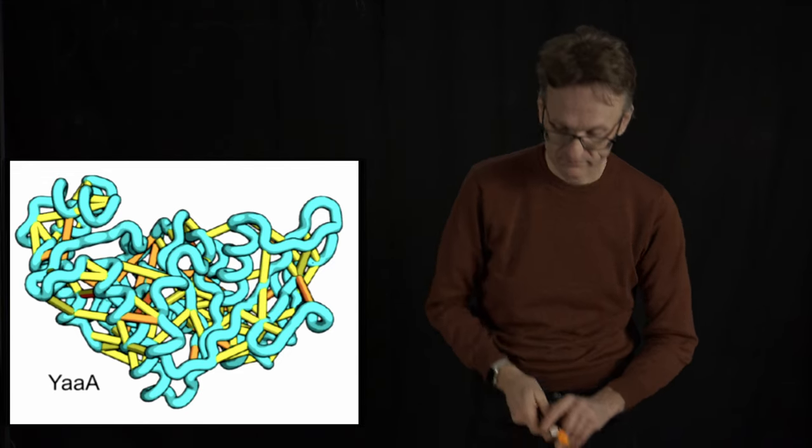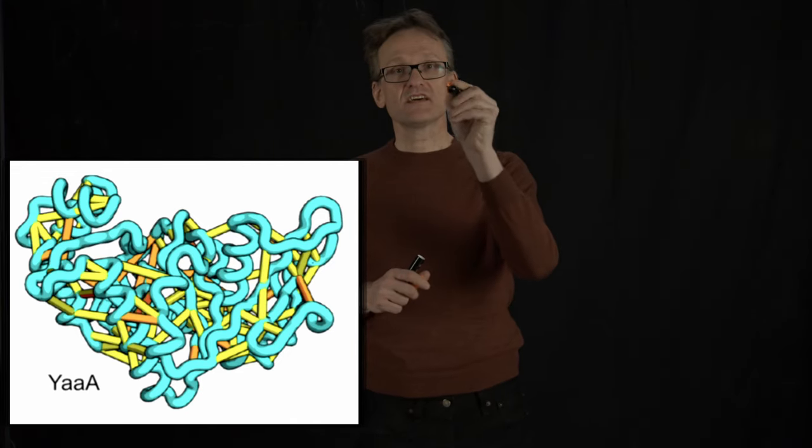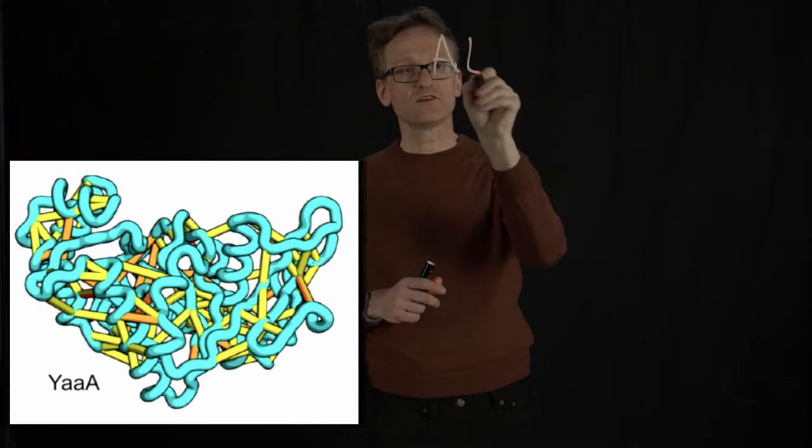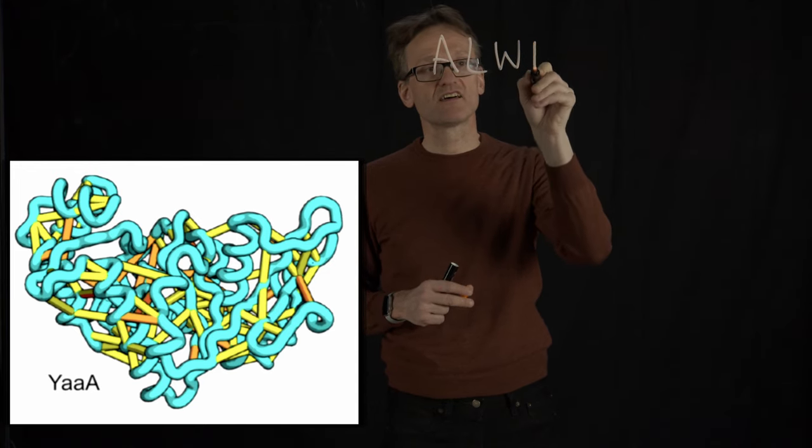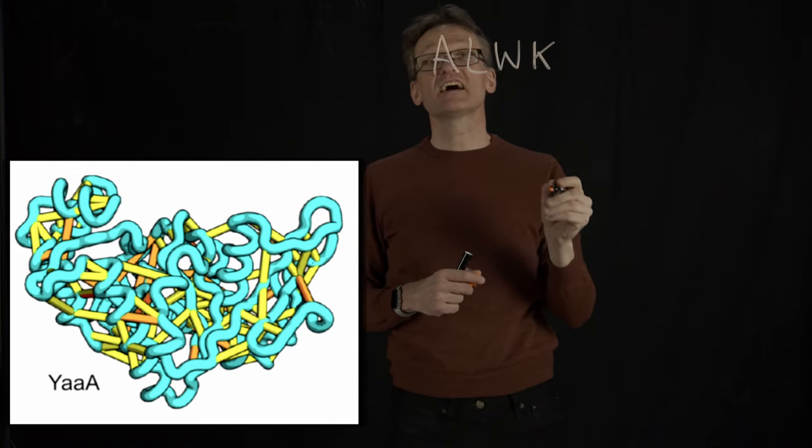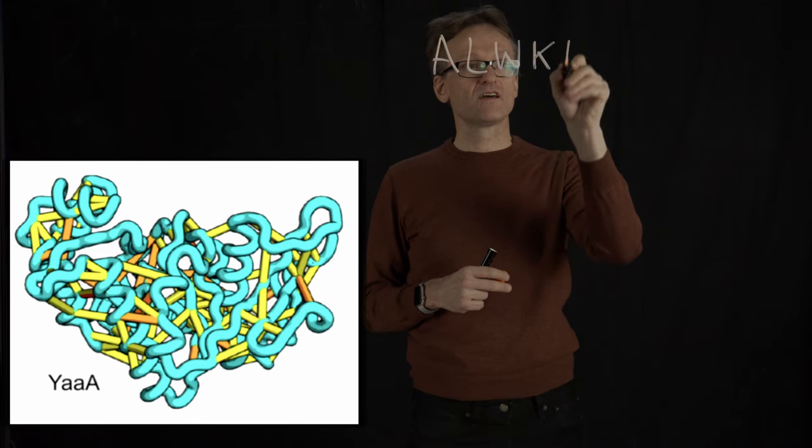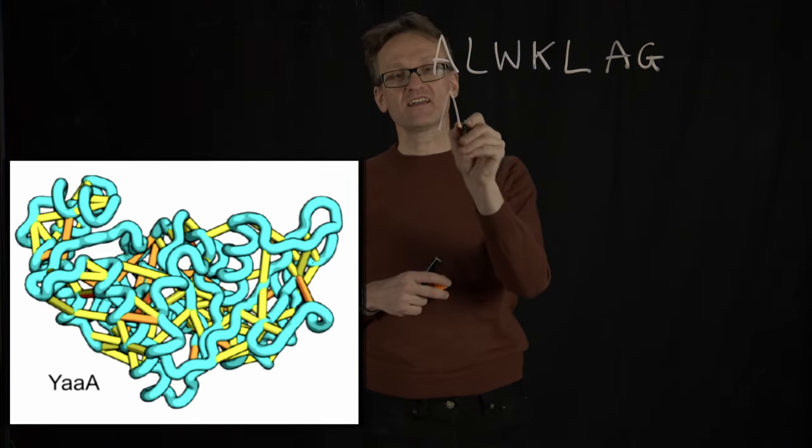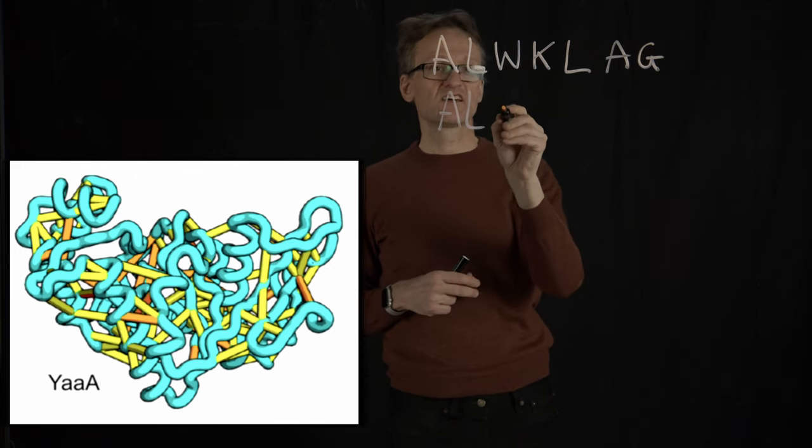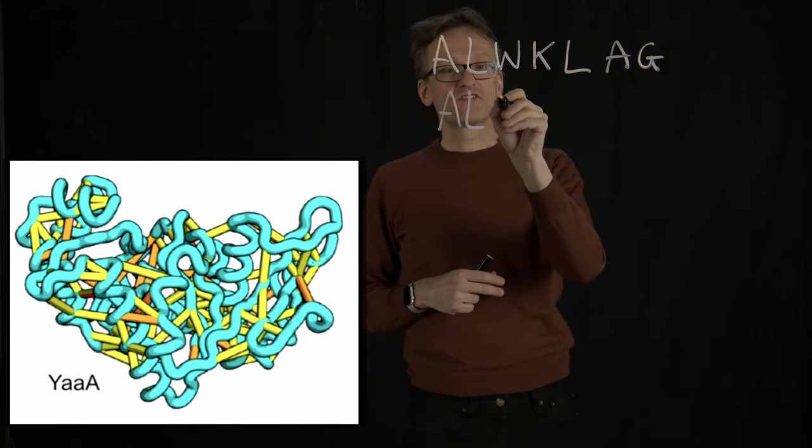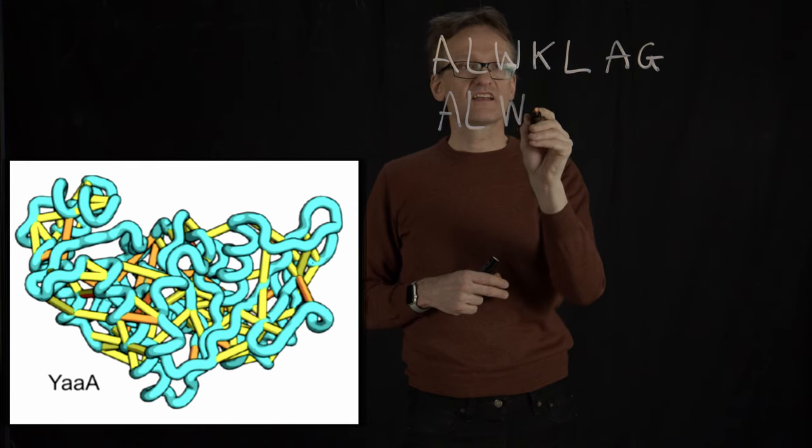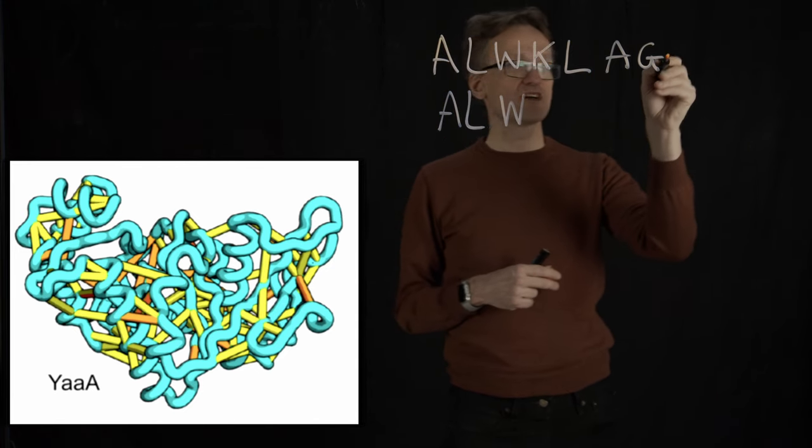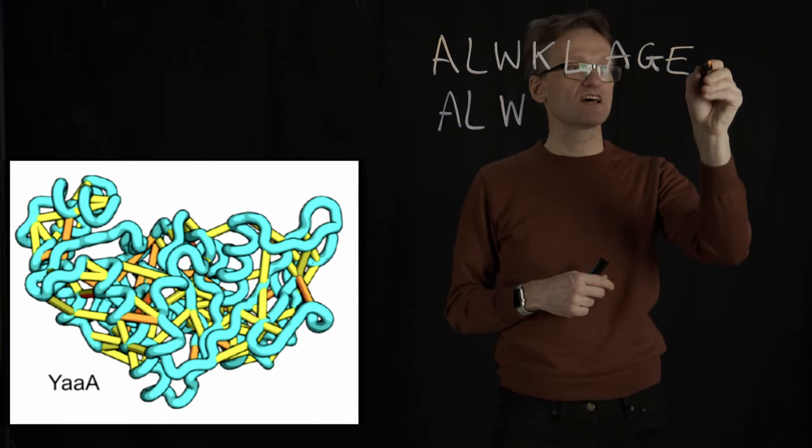So, say that I have alanine, leucine, tryptophan, let's say lysine, leucine, alanine, glycine. And then I have alanine, leucine, tryptophan. Let's assume that, oh sorry, I'll add another one, glutamic acid, valine.